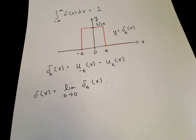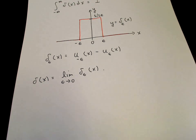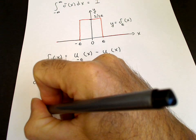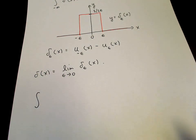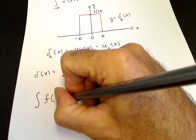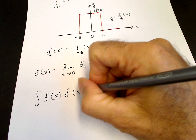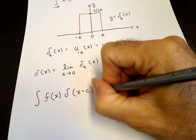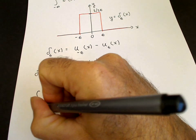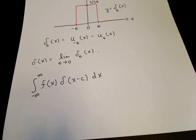So what is the property of the delta function that is most useful? If we integrate over a delta function times another function — we integrate f(x) times a delta function — and instead of placing the delta function at x equals zero, we can place the delta function at x equals c, and integrate across the singularity of the delta function. This integral turns out to be remarkably easy to do.